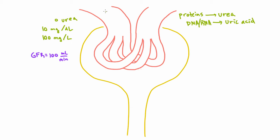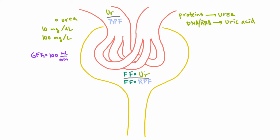This ends up being quite easy to calculate. The concentration of urea in Bowman's space is actually equal to its concentration in the afferent arteriole. The reason is that the amount of urea filtered is the filtration fraction times the amount coming in, and the volume filtered is the filtration fraction times the volume coming in — so when you divide to get concentration, the filtration fraction cancels. The concentration here is the same as the concentration there.